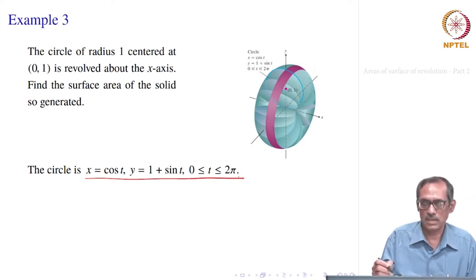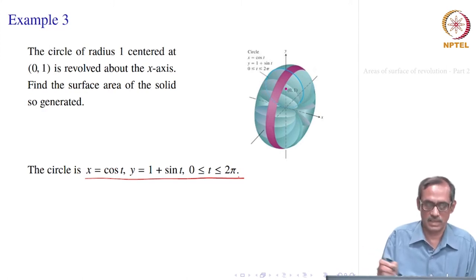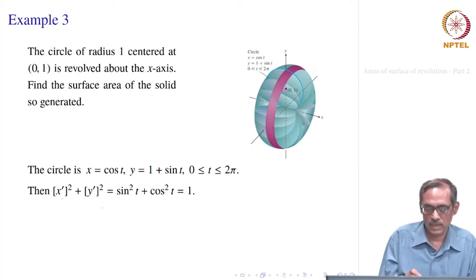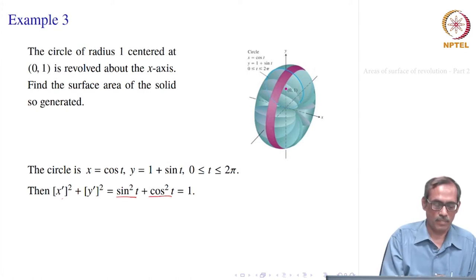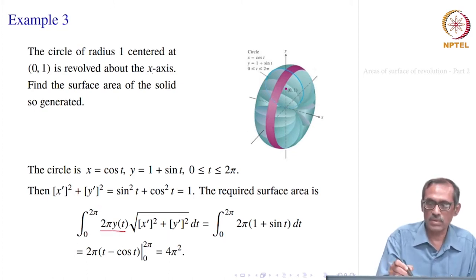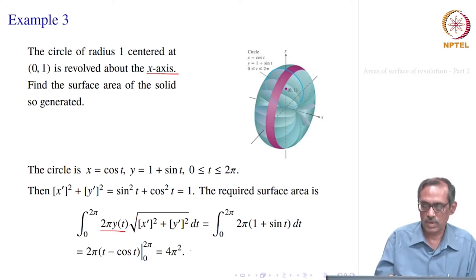Then we compute ds = √((dx/dt)² + (dy/dt)²) dt. So x′ = -sin(t), giving sin²(t), and the derivative of y = 1 + sin(t) is cos(t), giving cos²(t). So sin²(t) + cos²(t) = 1, and ds simplifies to dt.